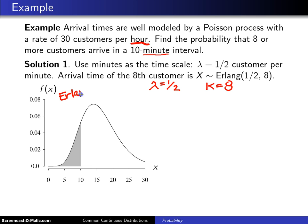That's exactly what you have right here. This is the probability density function of an Erlang random variable with parameters one-half and eight, and that represents the arrival time of the eighth customer. We're interested in the probability that eight or more customers arrive in a 10-minute interval.